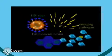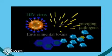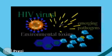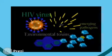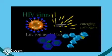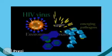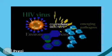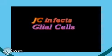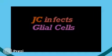JC virus remains dormant until the host is immunocompromised. HIV patients have a high incidence of JC virus-related PML — progressive multifocal leukoencephalopathy — and once the immune system is compromised, the virus can reactivate.